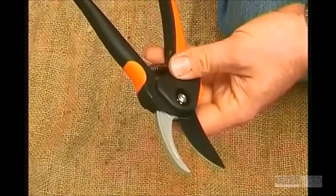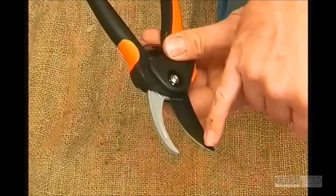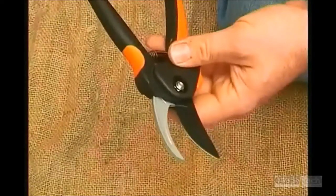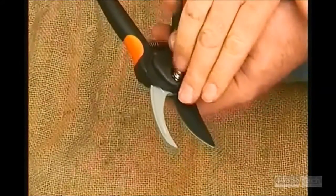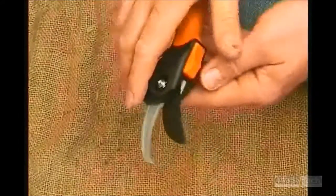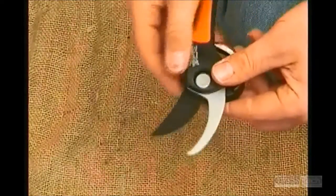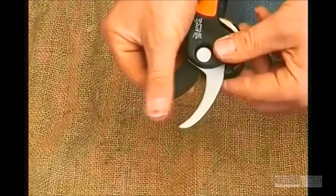Crossover secateurs have a bevel cut on the outside of the blade. The inside of the blade is totally flat with no bevel.